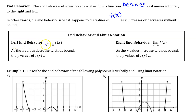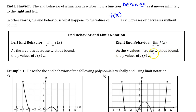Left end behavior is the limit of f of x as x approaches negative infinity — as the x values decrease without bound, the y values of f of x do whatever the left end behavior is. For right end behavior, it's the limit of f of x as x approaches positive infinity — as the x values increase without bound, the y values of f of x do whatever the right end behavior is.